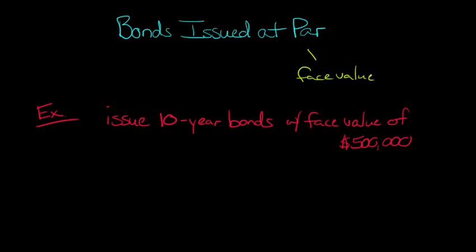And up front, of course, we're getting $500,000. Now what is the lender getting in return? The lender is getting an interest rate of 8%, and that is payable semi-annually—twice a year.